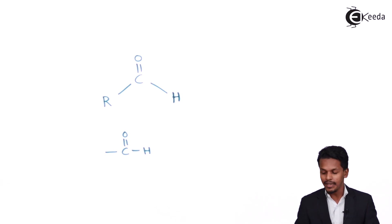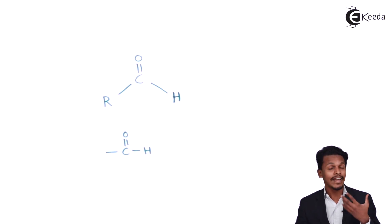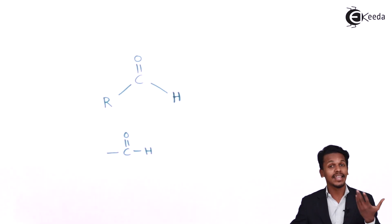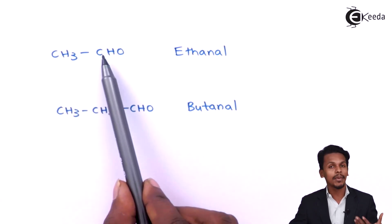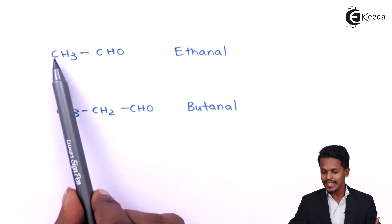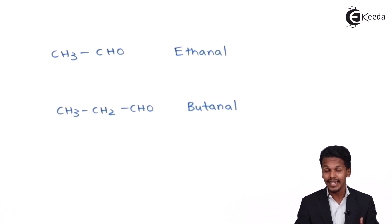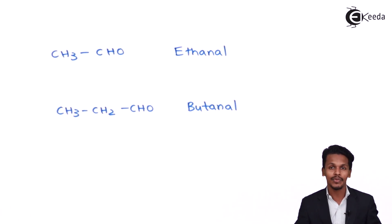Now let me give you an example to understand that the R group can be an alkyl or an aryl group. The first example is CH3C=O-H, which we can also write as CH3CHO. Since this consists of two carbon atoms, the name of this compound is ethanal. How the name ethanal is derived will be covered in a separate lecture on nomenclature of aldehydes and ketones.